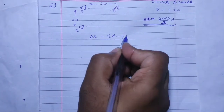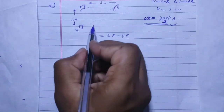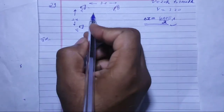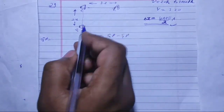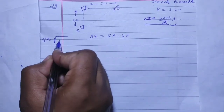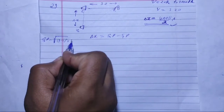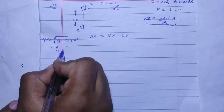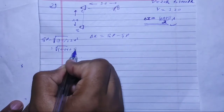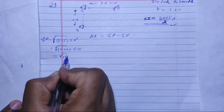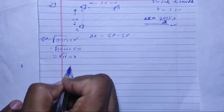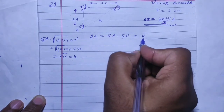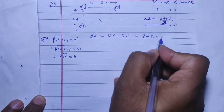S1P is 3.2 meters. Now to find S2P: a right angle triangle is formed, so S2P = √(3.2² + 2.4²). That gives √(10.24 + 5.76) = √16 = 4 meters. So the path difference is 4 minus 3.2, which equals 0.8 meters.